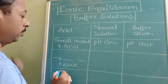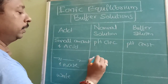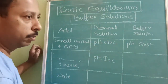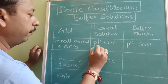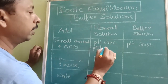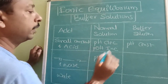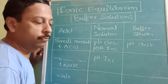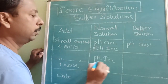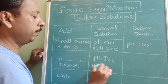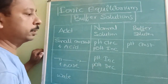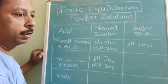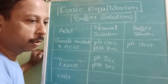If we add a small amount of base, then pH will increase in a normal solution. Because pH + pOH equals 14, so if one decreases the other increases. If we are adding water, concentration changes.